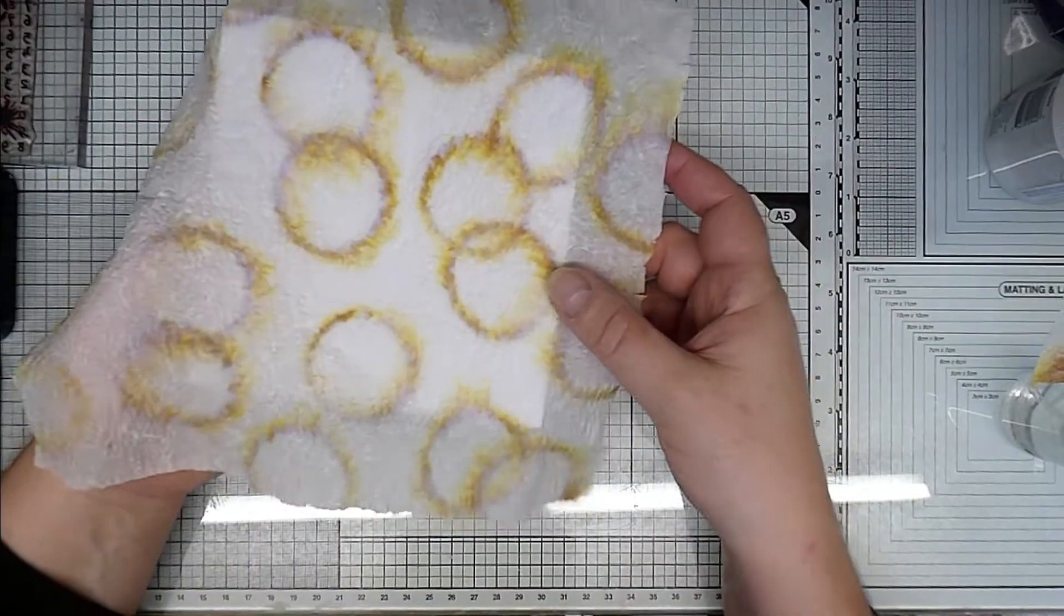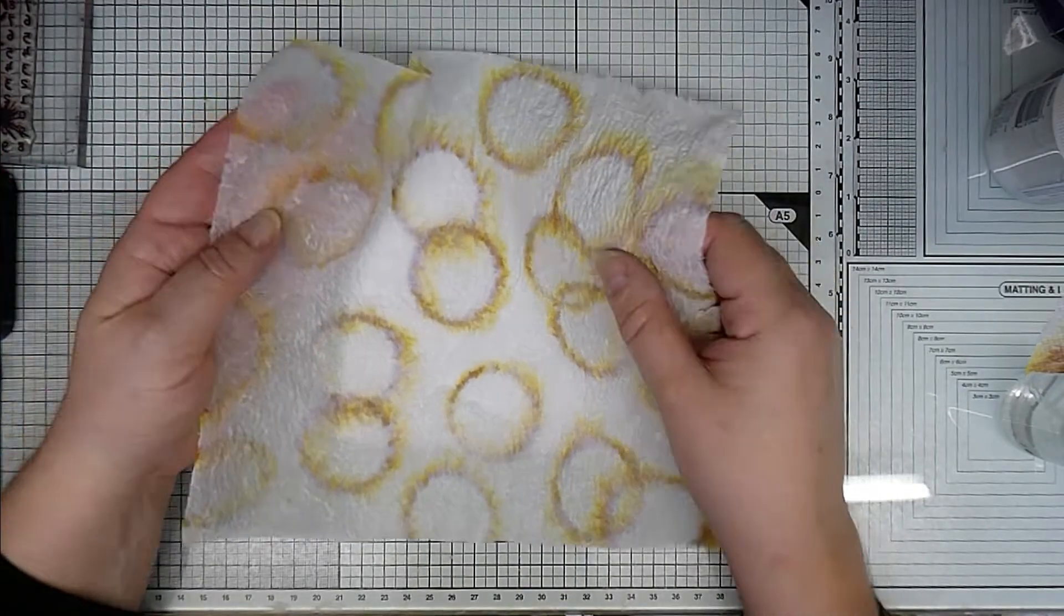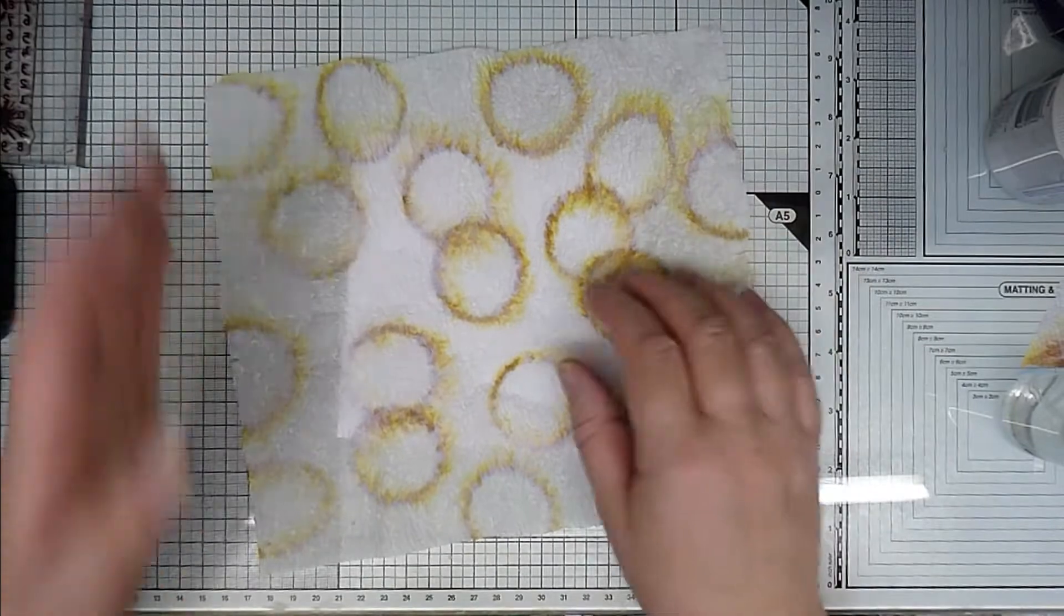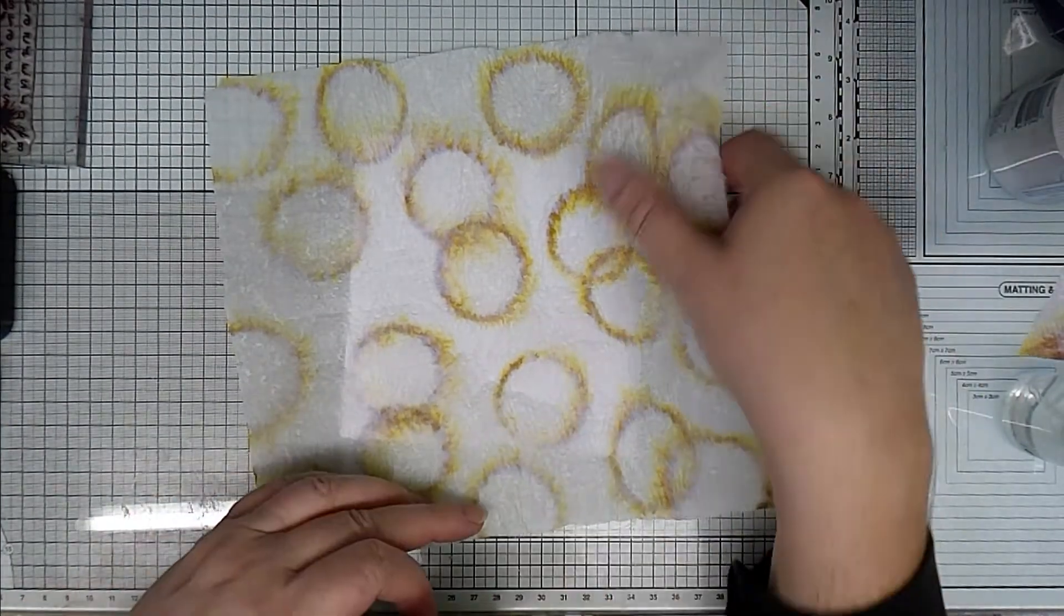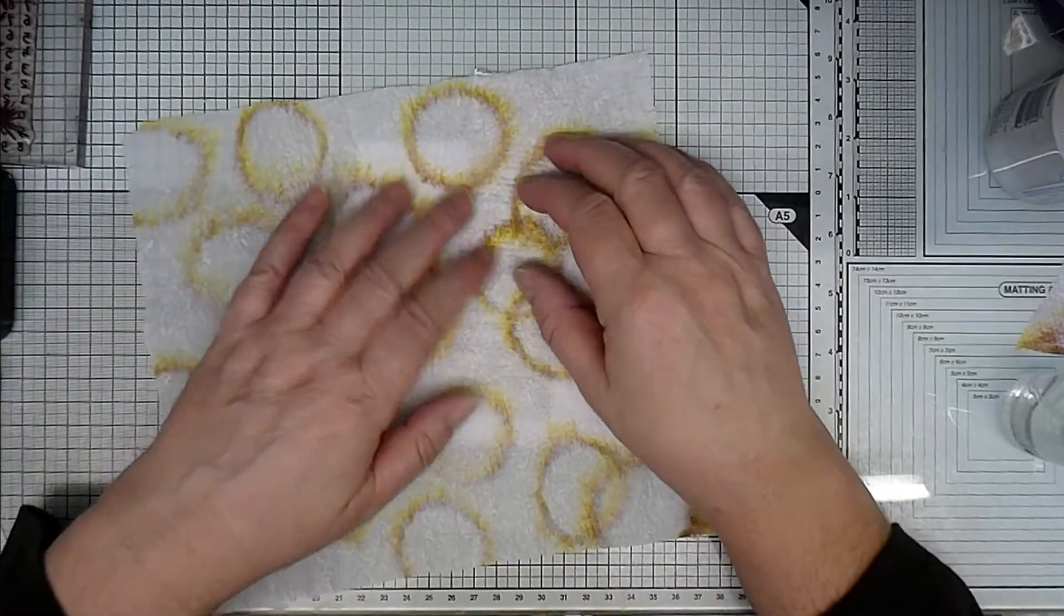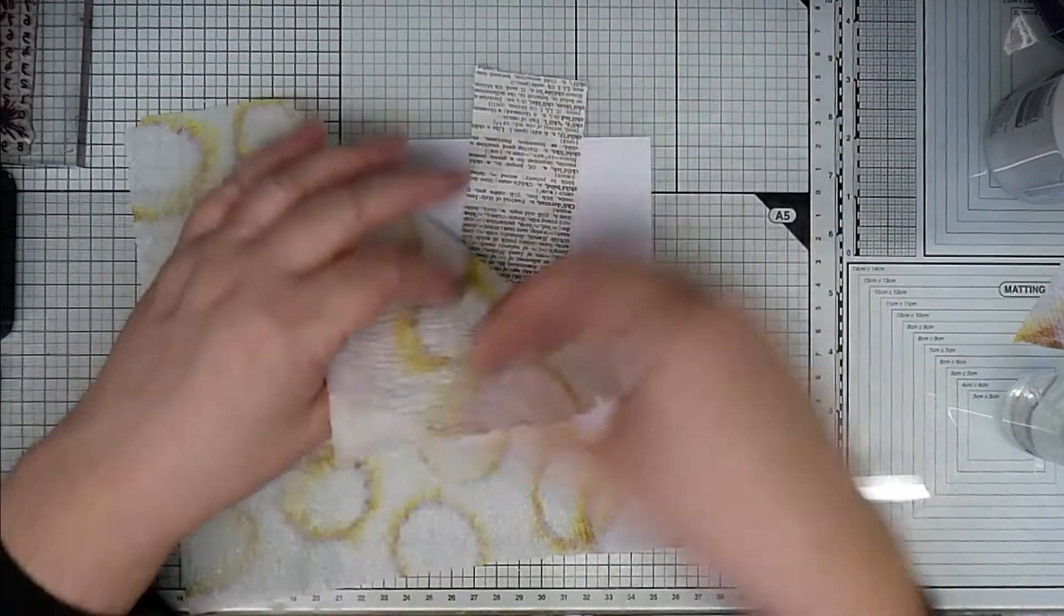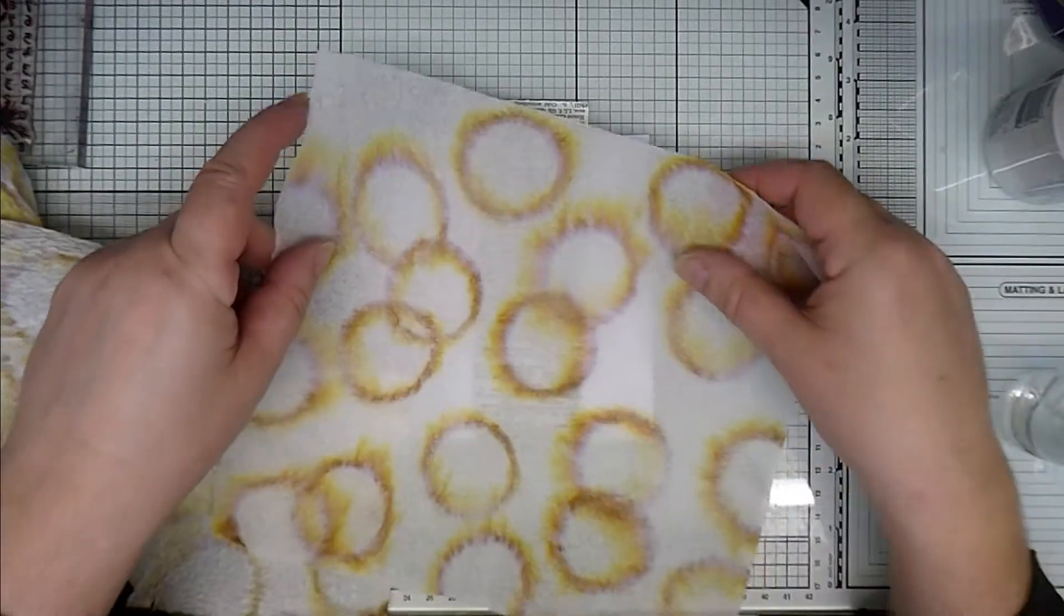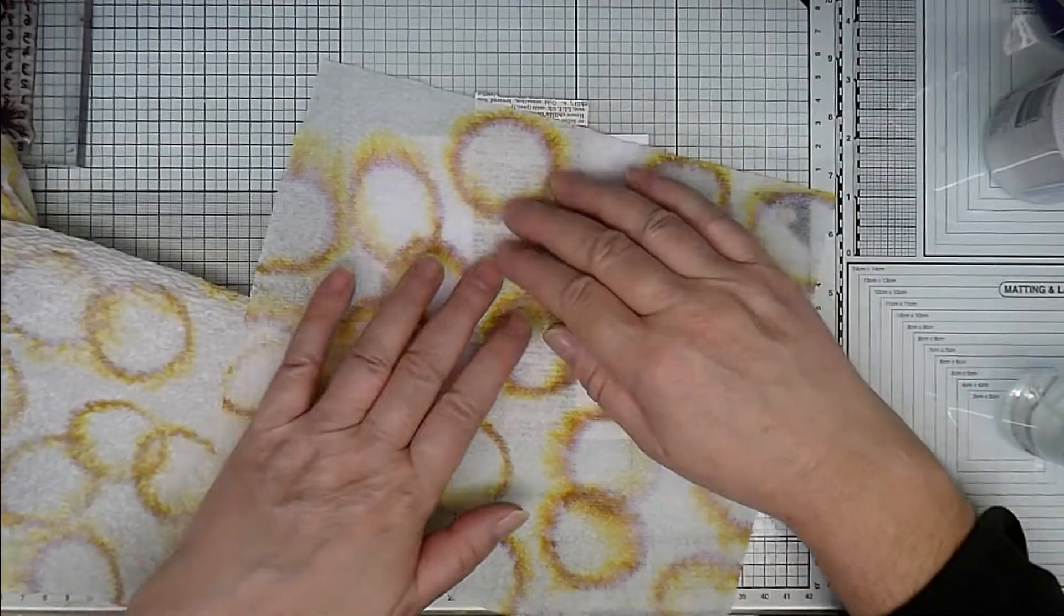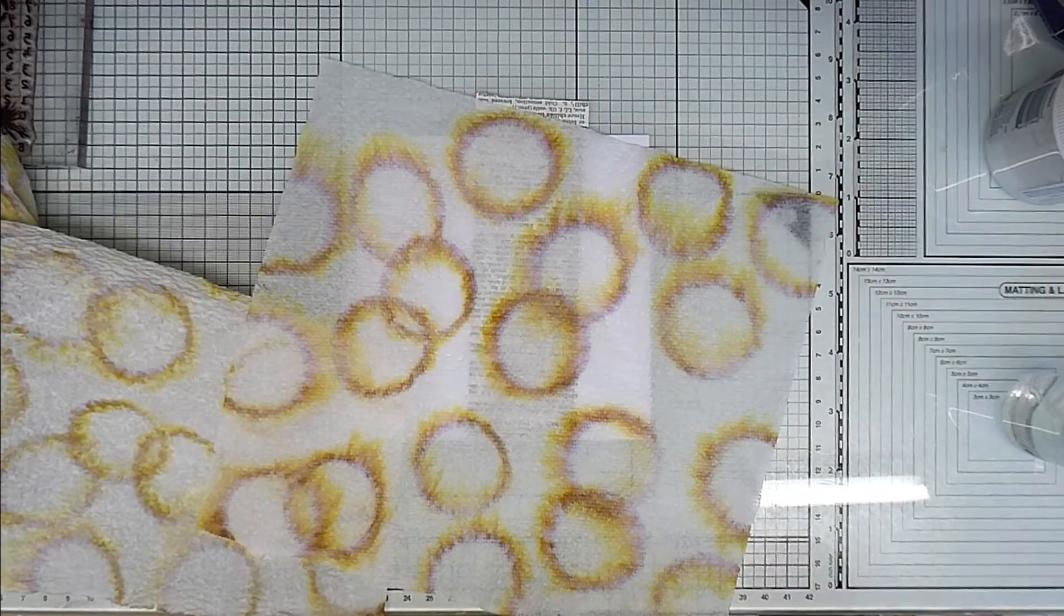And the underside is nice as well. So I'll create some ATCs. What I'm thinking is possibly with a backing of book pages, because then you can see the book pages through. So I think that will look really nice on top of book pages and then a couple of focal points.